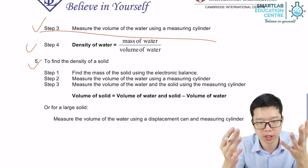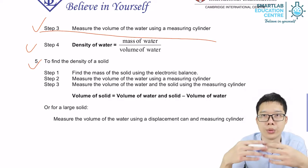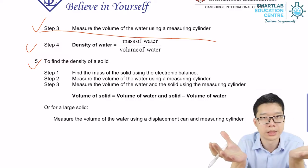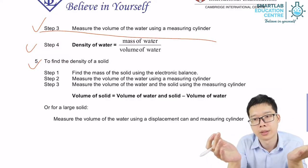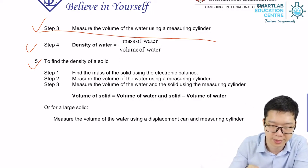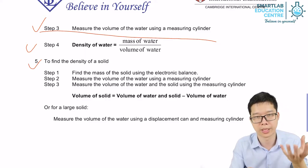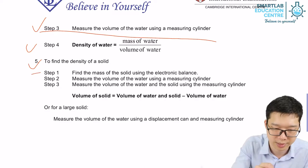If we want to find the density of a solid, how are you going to find the density? Number one, we use a measuring beam balance or electronic balance. We find the mass. We don't need the beaker or container because we can straight away use a balance to measure the mass of a solid. So this step is easy.